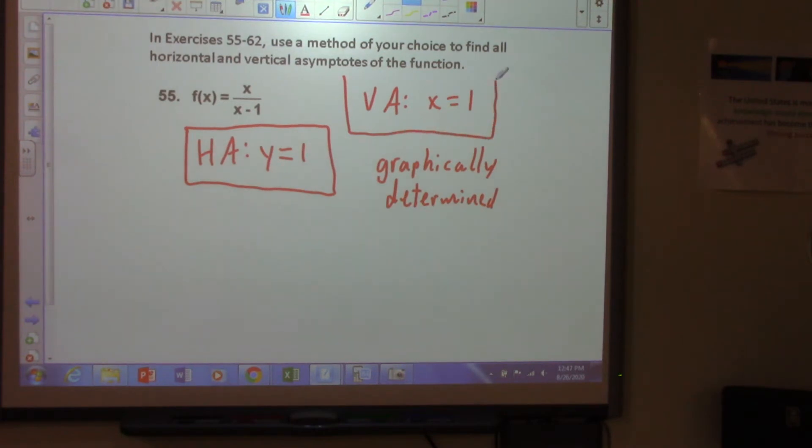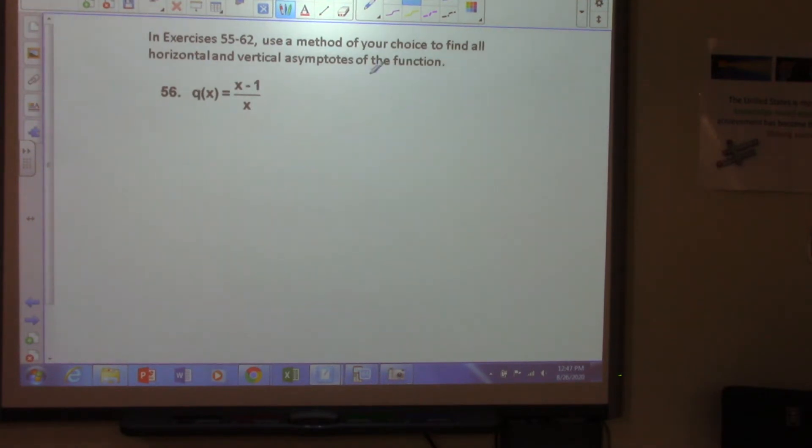Okay, now what I want to do with the next one, it's a very similar type of problem, but I'm going to use analysis first on number 56. So here we are on 56, and we want to find a vertical asymptote. What do you have to have to have a vertical asymptote?